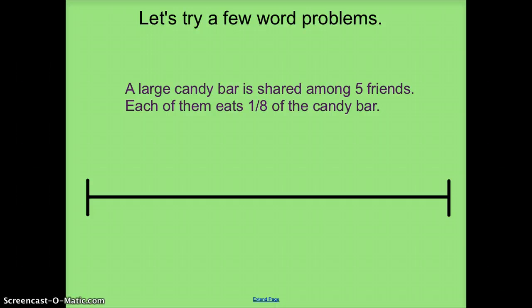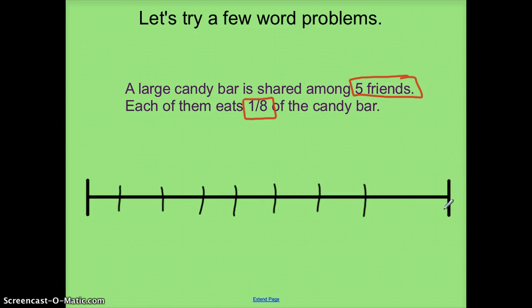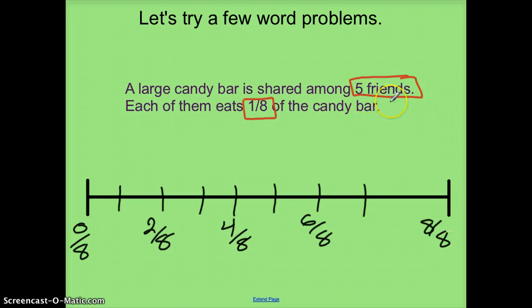Let's try another. A large candy bar is shared among five friends. Each of them eats one-eighth of the candy bar. I'm going to be increasing by one-eighth each time, and I have five people, so I need room for at least five marks — I'll draw zero through eight. Since we're increasing by eighths, I'll start at zero-eighths and label: two-eighths, four-eighths, six-eighths, and eight-eighths. I only need at least five marks, so I have enough room.